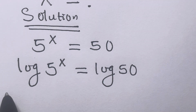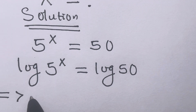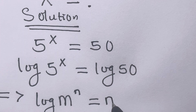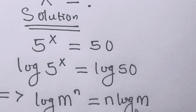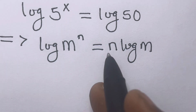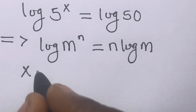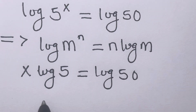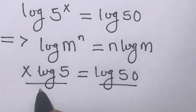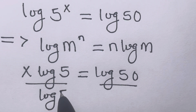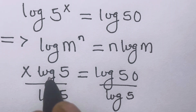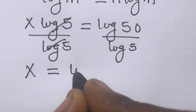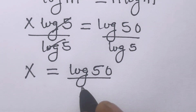From the law of logarithms, if you have log m raised to the power n, this becomes n log m. Applying this to the above, we will have x log 5 equals log 50. From here we can divide both sides by log 5 — this will cancel, so we will have x equals log 50 divided by log 5.